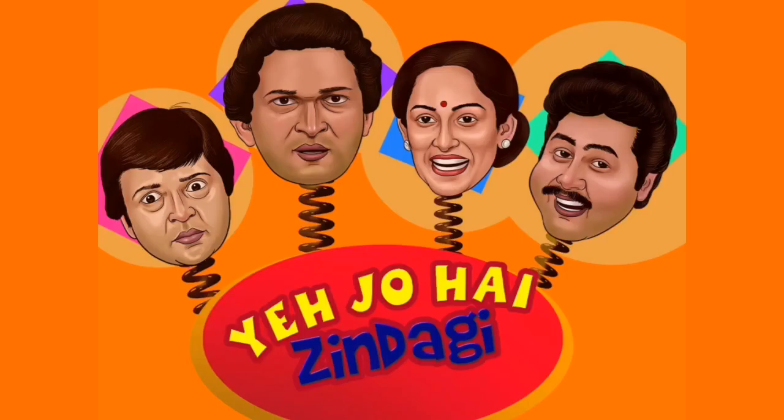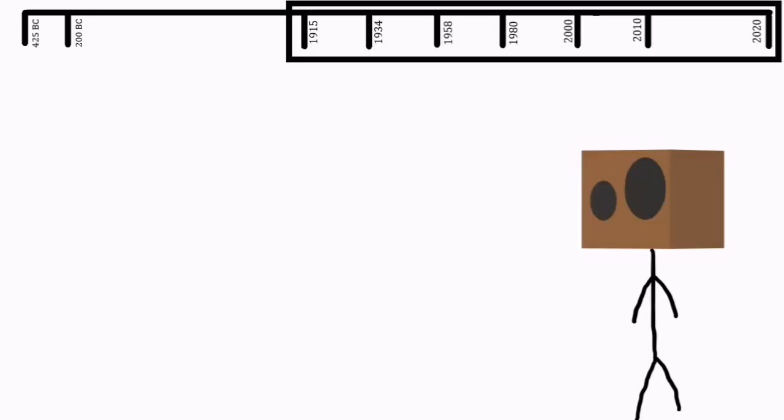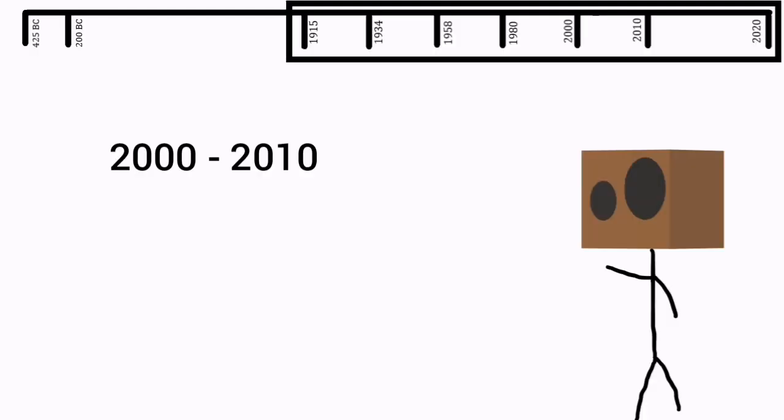During this time, in 1984, the first comedy sitcom started called Yeh Jo Hai Zindagi, followed by many other shows. During this era, mimicry was arising and Johnny Lever had his first popular stage performance, Kabaddi. From 2000 to 2010, 12 comedy films were released.